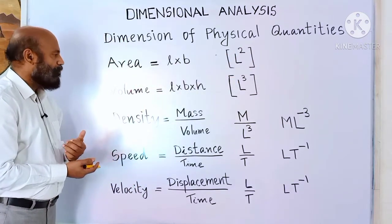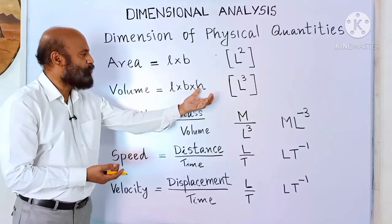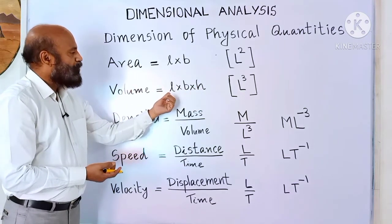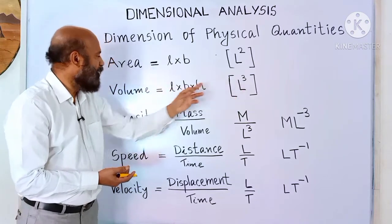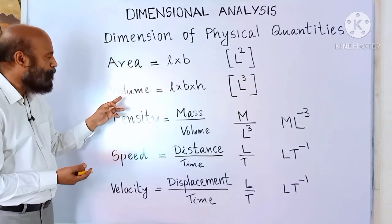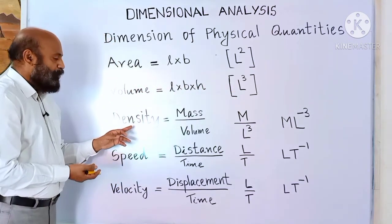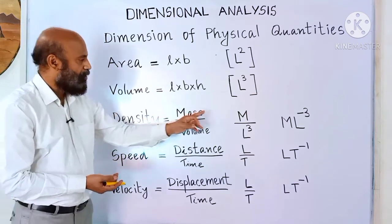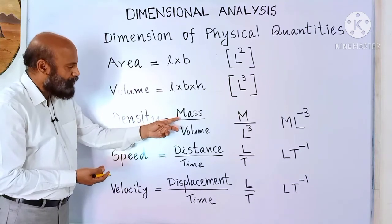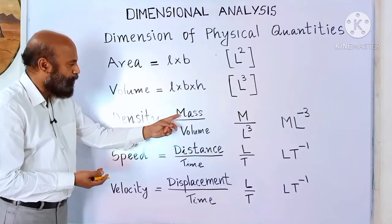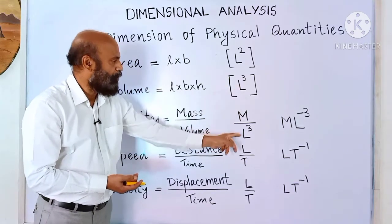Volume of a cuboid is length into breadth into height. All are measured in meters and dimension is capital L, so it is L cubed. So dimension of volume is L cubed. Dimension of density is M by L cubed. Density is mass divided by volume. Mass dimension is capital M and volume dimension is L cubed.